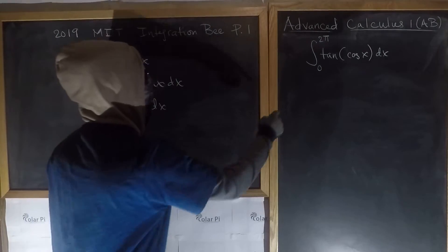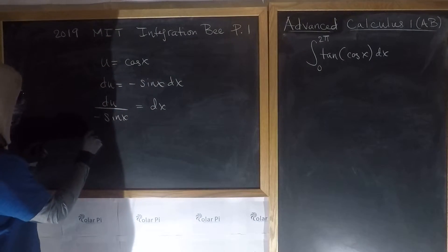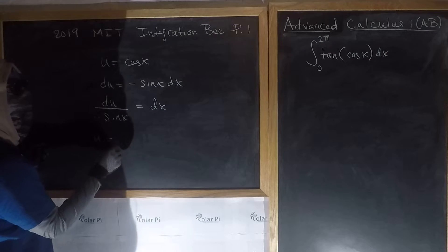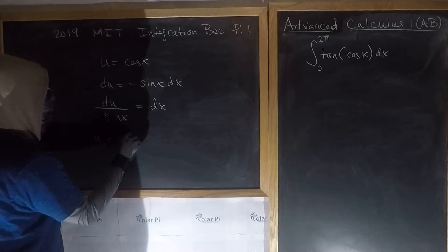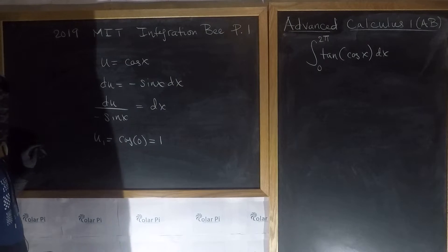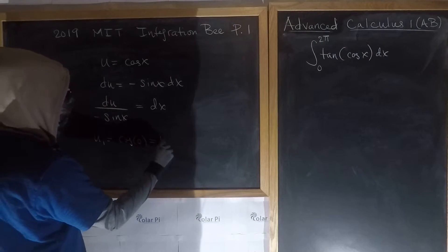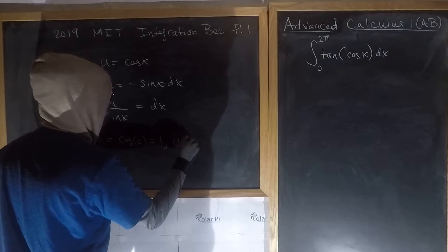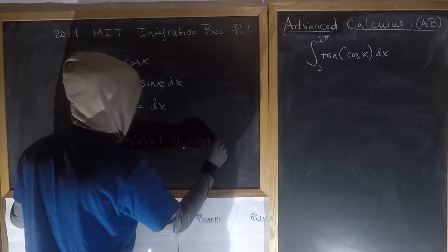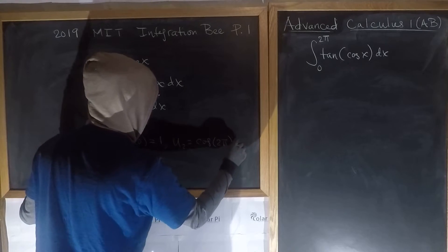if u is cosine x, we see that this lower limit, if we call it u₁, is going to be cosine of 0, which is 1. And then the upper limit, if we call it u₂, is going to be cosine of 2π, which is also 1.